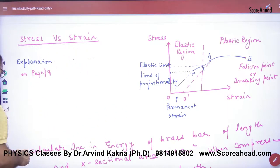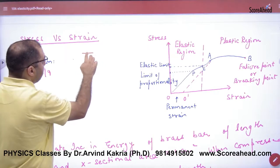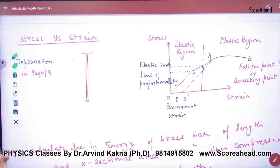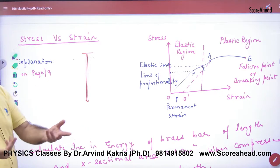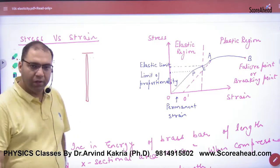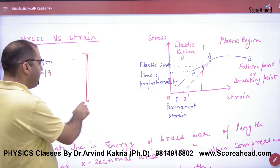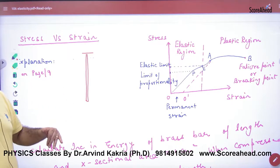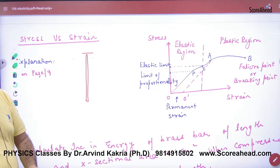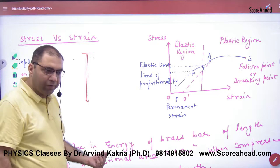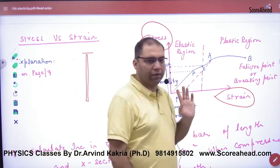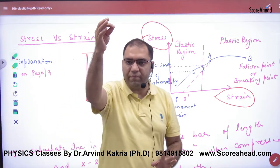Let's do an experiment. Think of an elastic wire — like a rubber band or a steel wire. Steel is elastic. I will apply force to elongate it, produce stress and strain, and then plot the stress vs strain graph as I pull it out.